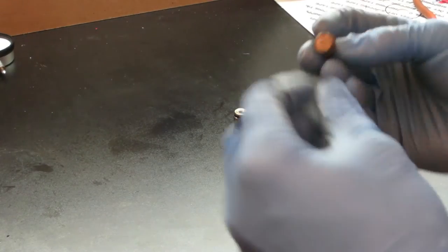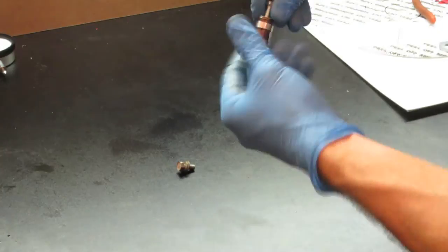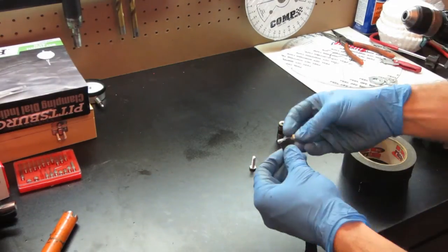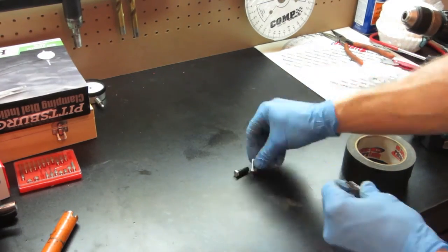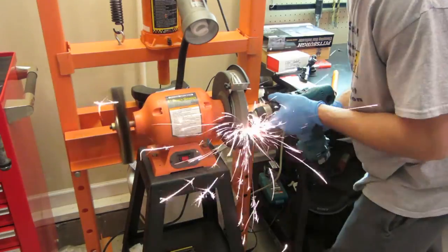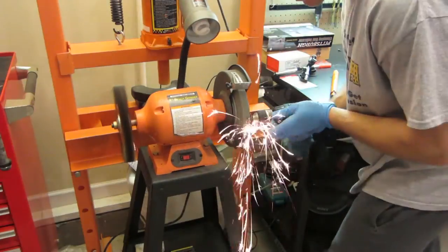The bolts that we initially tried to use had these captive washers on the end and they were too short. After a little digging, we found some longer bolts that would work. Protect the threads of your bolts to ensure easy adjustment during use. Now chuck up your bolts in a drill and go to town shaping the head of the bolts like the factory lifters.